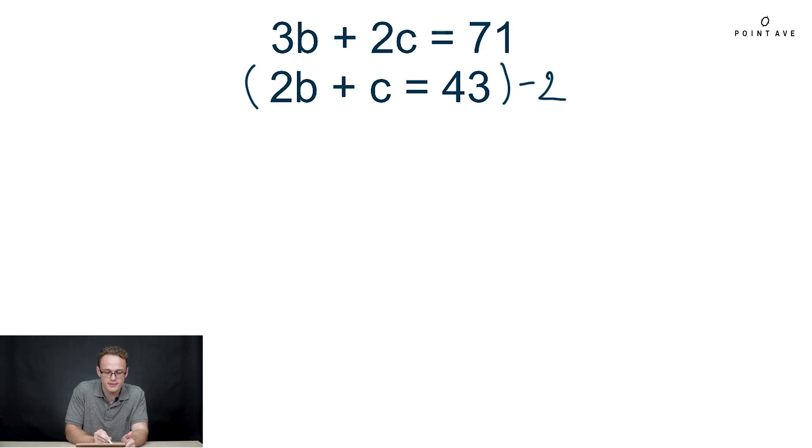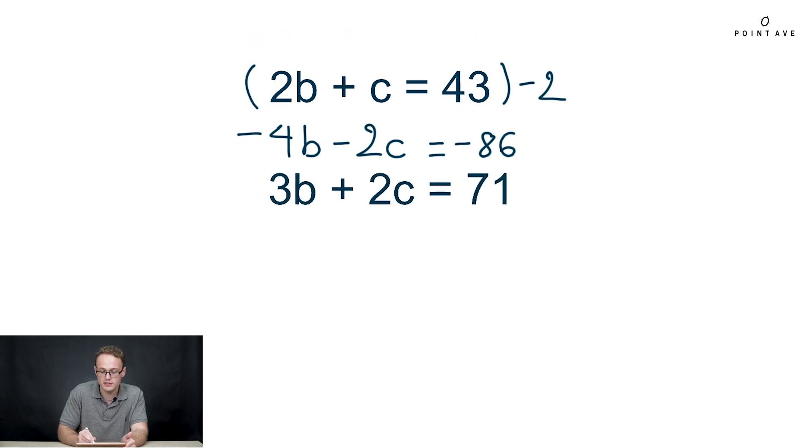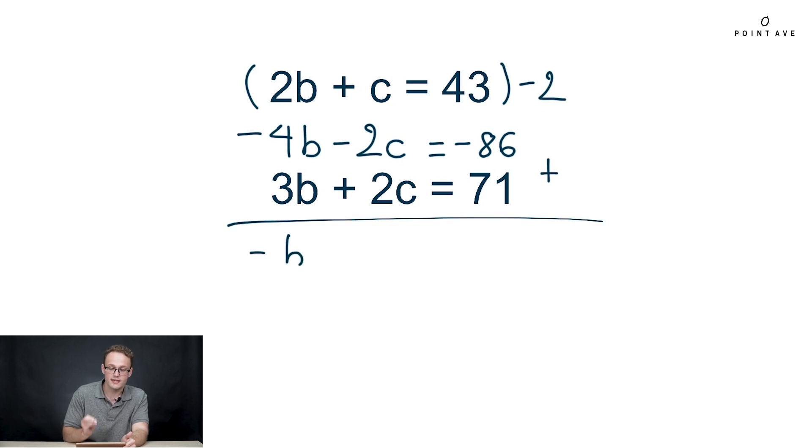When we do that, we get the second equation becomes negative 4B minus 2C equals negative 86. And if we now realign our new equation with the other one and we add them together, what we get is negative B, and then the key part is these two C's cancel, which is exactly what we wanted from the start.